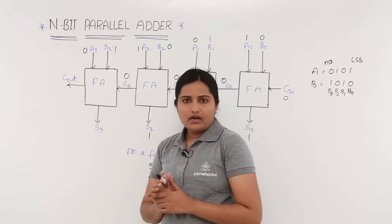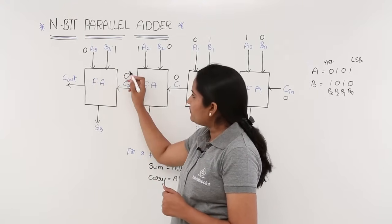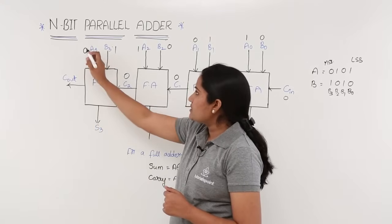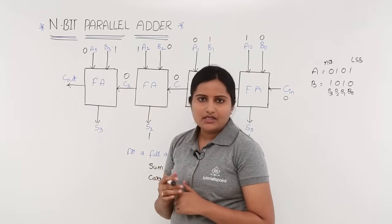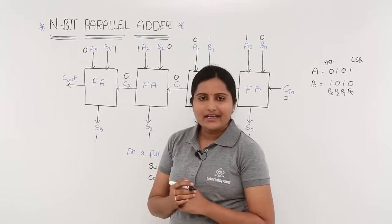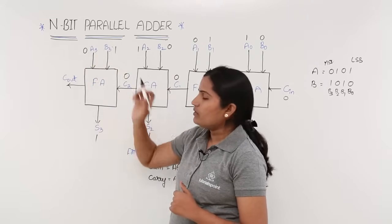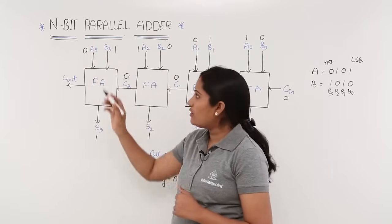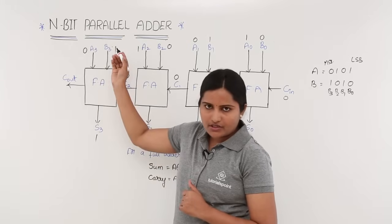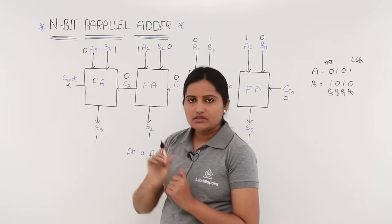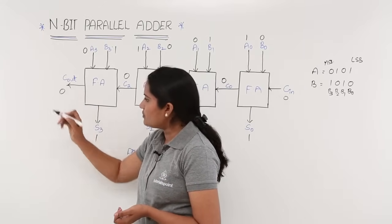Now we are at the last, fourth full adder in this 4-bit addition. The input bits are 0, 1, 0. XOR of 0, 1, 0 gives S3 = 1. To get the carry-out: 0×1 + 1×0 + 0×0 = 0, and 0×0 = 0. All products are 0, so the carry-out is equal to 0.